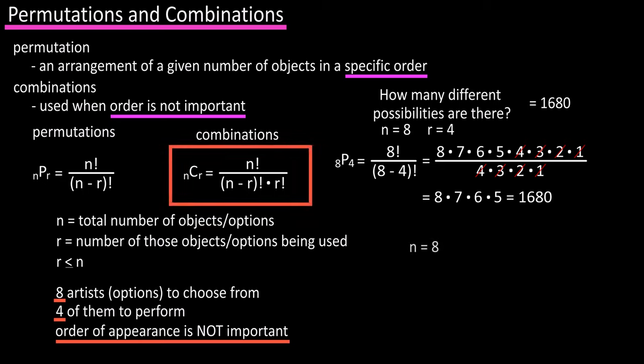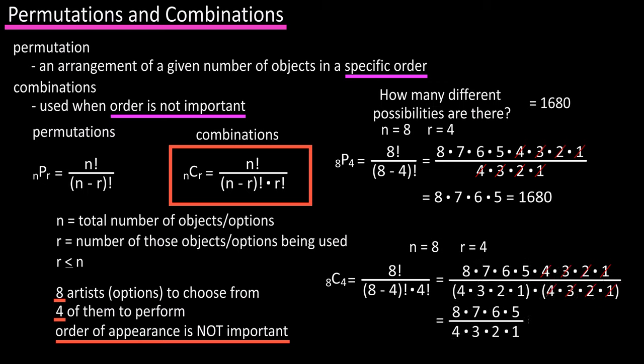So again, our n value is 8, the total number of options, and r value is 4, the total number of options being used. Our equation is C(8,4) equals 8 factorial divided by 8 minus 4 factorial times 4 factorial. Going through and doing our math, we get 70.